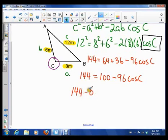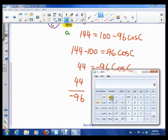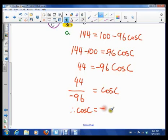Well, a good idea is to subtract 100 from both sides. So that gives us 44 is negative 96 cos C. And now we can do 44 divided by negative 96 is equal to cos C. So let's see what this is on our calculator. So 44 divided by 96 is negative. So that's negative 0.4583. So cos C is negative 0.4583.